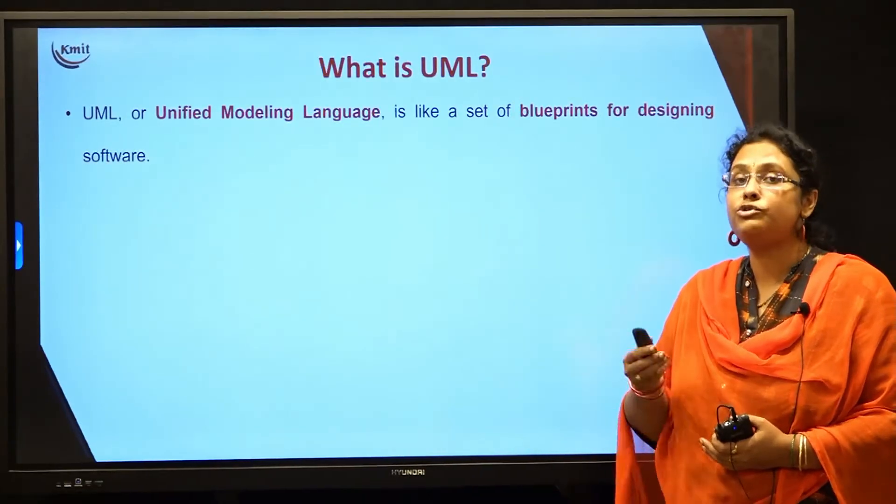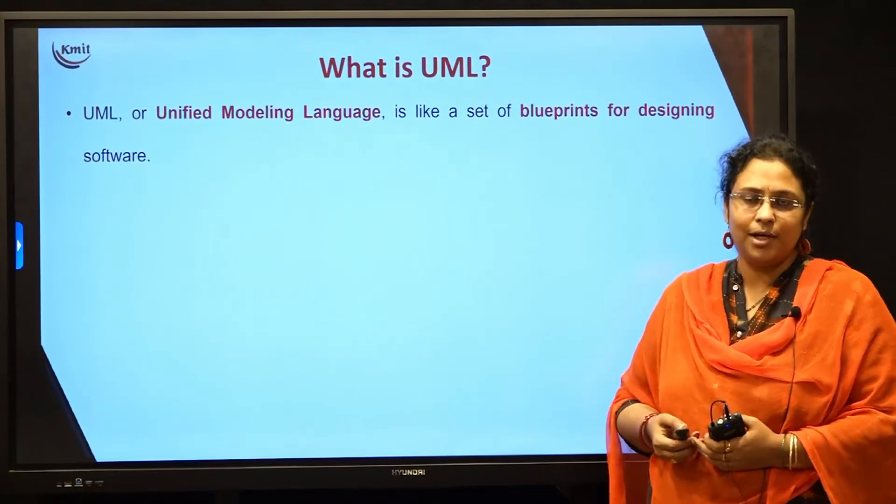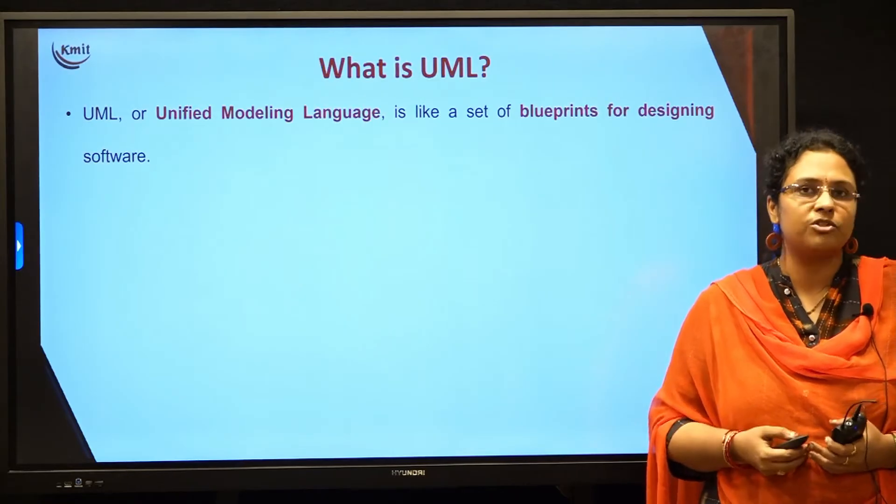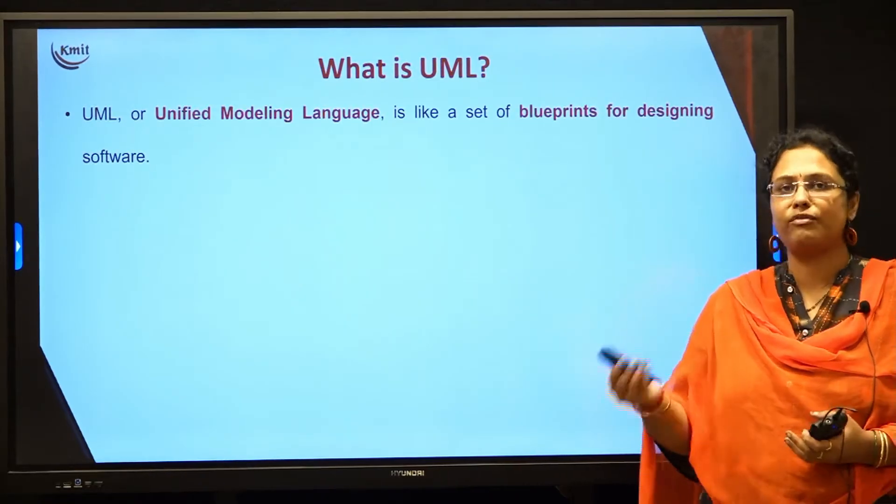UML is basically abbreviated as Unified Modeling Language. It is a language which will help us to draw the pictures of the software that we are developing. UML basically helps the different categories of people who are involved in software development — it will help the users to understand what is going on, the developers to understand how to develop the software, and the testers to understand how to test the software. Everybody will be able to understand very clearly what is going on using these pictures drawn using UML.